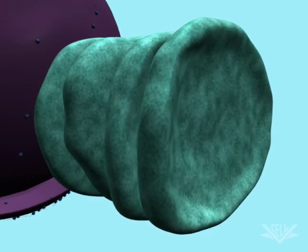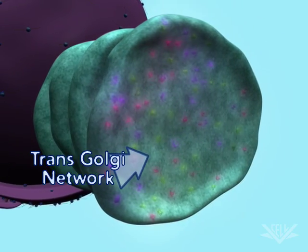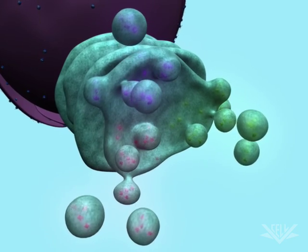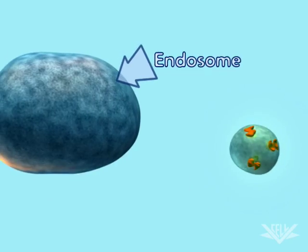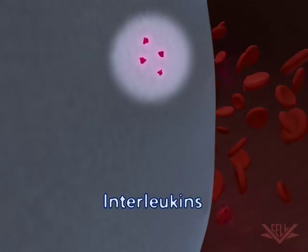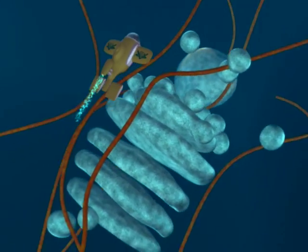Eventually, the cisterna will mature into the trans-Golgi network. From here, vesicles can deliver proteins to cellular locations such as the endosome or the cell membrane, where the proteins can be embedded or exported from the cell.